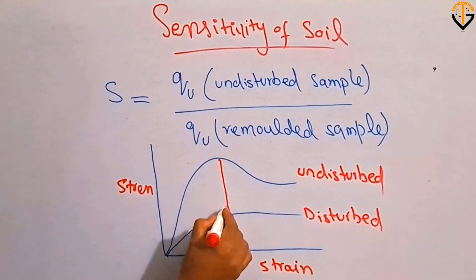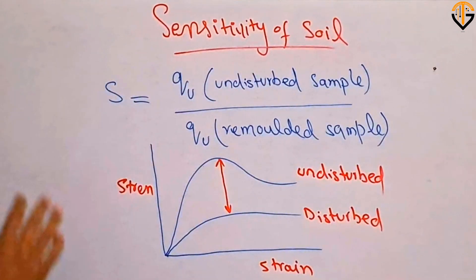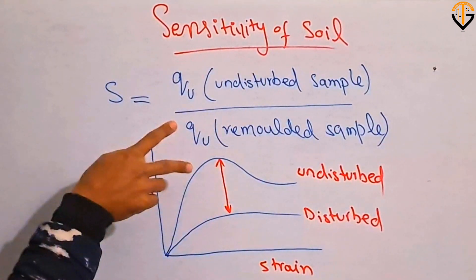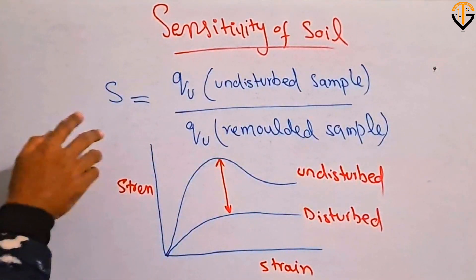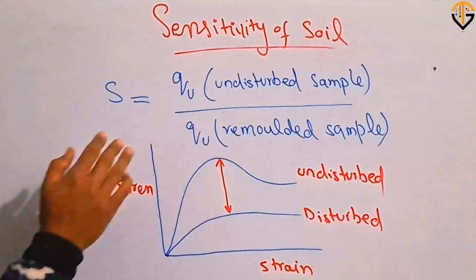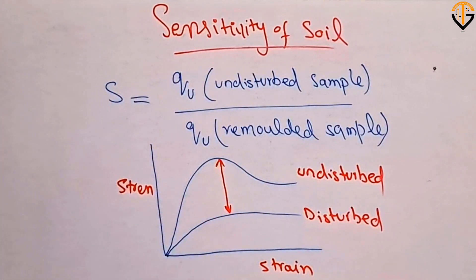The difference between these two, or the ratio of undisturbed to disturbed sample of unconfined compressive strength, is regarded as the sensitivity. The more this gap, the greater will be the sensitivity, greater will be the ratio of both of these values, and more will be the problematic or sensitive soil.